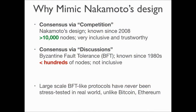Nakamoto's protocol is the first consensus via competition. We actually knew about consensus many years back — like 40 years back. But the previous designs are not very inclusive, and can only be run among, like, hundreds of nodes. We can argue this is less trustworthy because fewer nodes are involved. And large-scale protocols with lots of interaction have never been stress-tested in the real world. This is very different from where we started at Bitcoin and Ethereum.